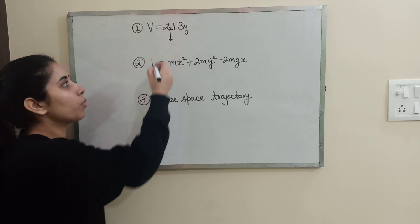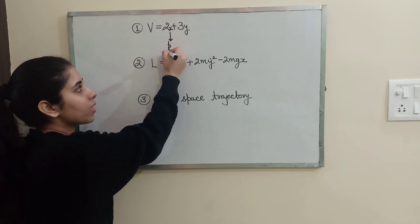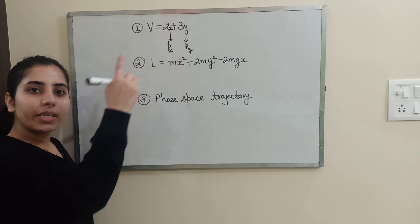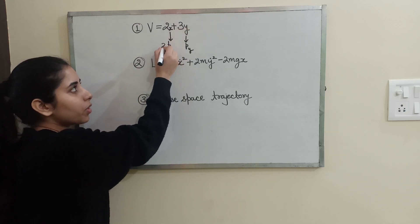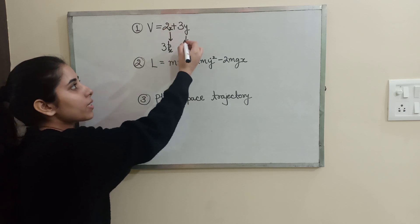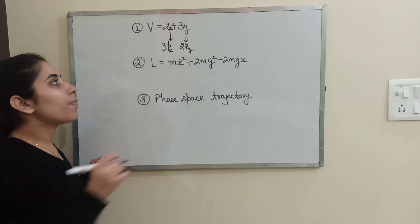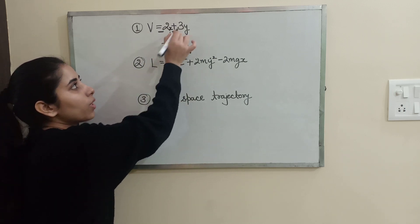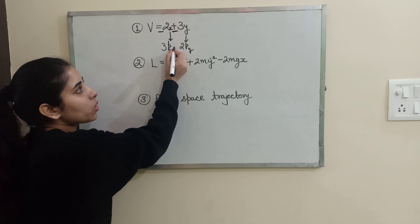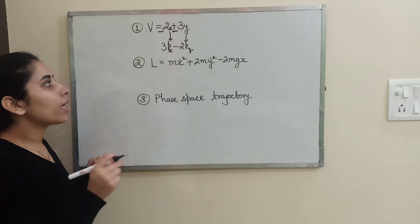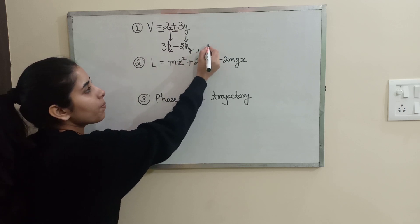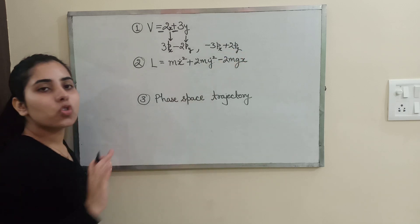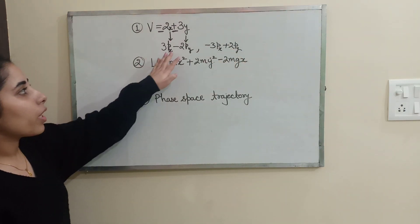What you have to do is write the x-corresponding momentum component Px and the y-corresponding momentum component Py. After that, interchange the coefficients: the coefficient 3 (from 3y) goes with Px, and the coefficient 2 (from 2x) goes with Py. Then change the sign of one term. So the result will be: minus 3Px plus 2Py. The option matching this form gives you the conserved quantity or constant of motion.